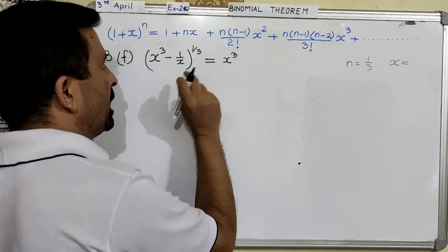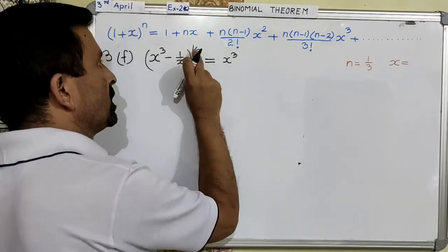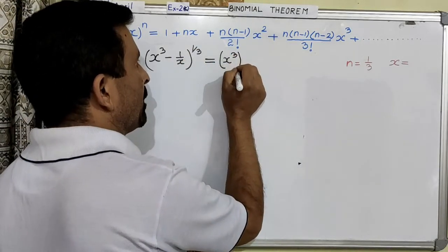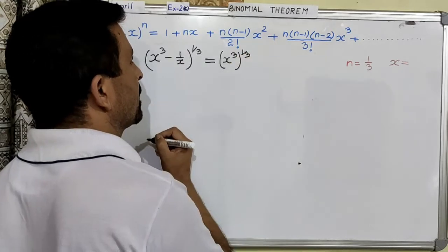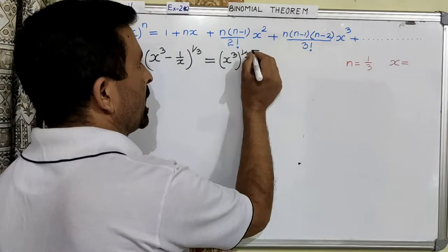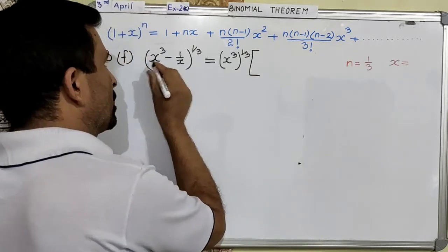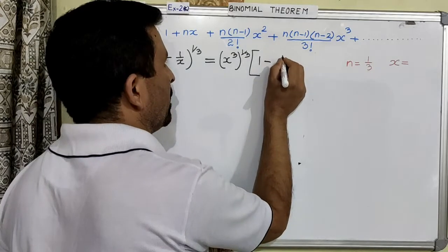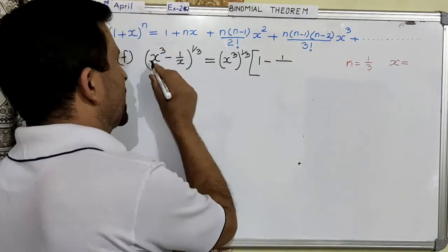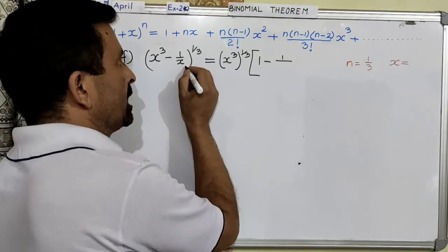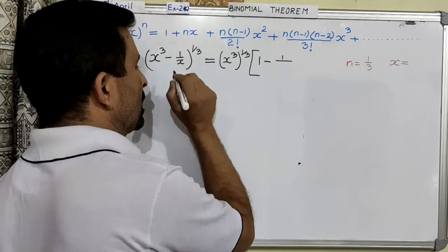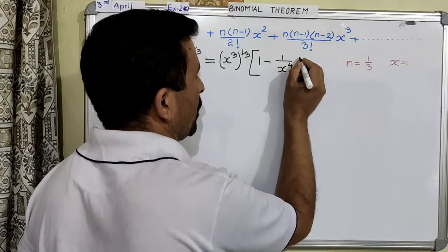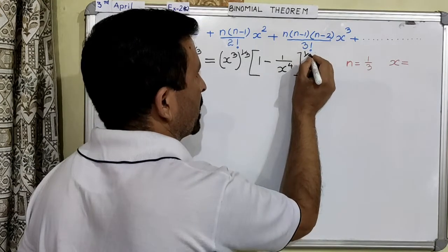x cubed is the first term. Now this x cubed will be given the power which is the power of the bracket, so we will give the bracket power 1 over 3. And now the remaining we will write inside the bracket — because you have already taken out the first term, therefore this will turn into 1. And now minus 1 over — whatever you have taken out will go in the denominator of the second term. This is already x, and further you are supplying this to x cubed, so this becomes x to the power 4, and then power is 1 over 3.